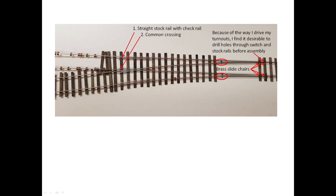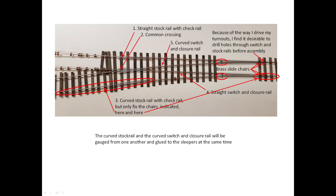Then the prefabricated common crossing, which is gauged from the straight stock rail. The curved stock rail with pre-attached check rail is gauged from the common crossing and at the toe-in from the straight stock rail, but is only attached to the sleepers shown here. The remaining chairs will be attached to the sleepers when the curved switch and closure rail is in place. And then the straight switch and closure rail, which is gauged from the straight stock rail. Finally, the curved switch and closure rail.